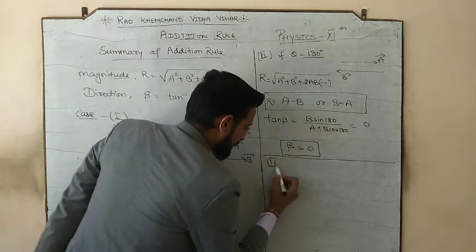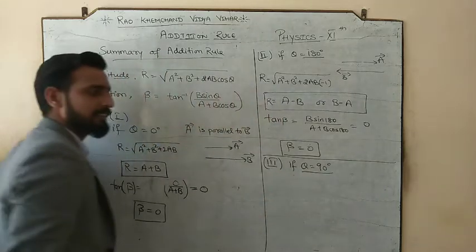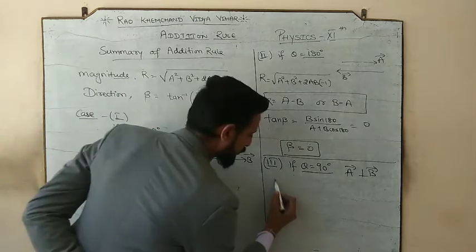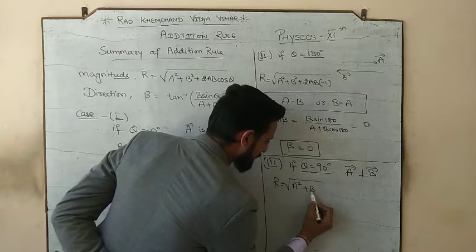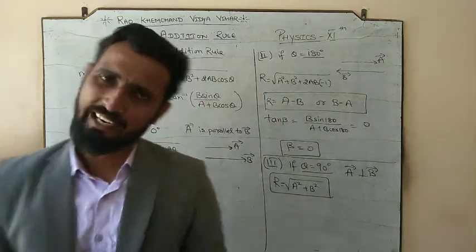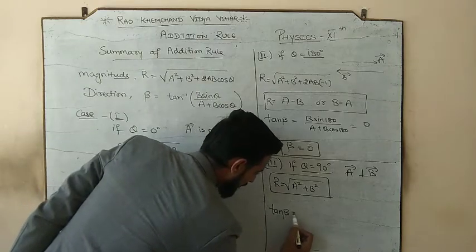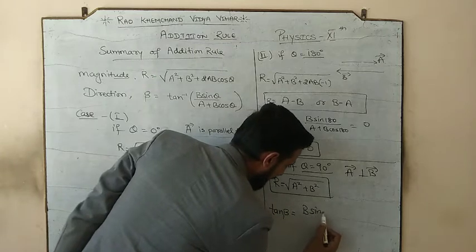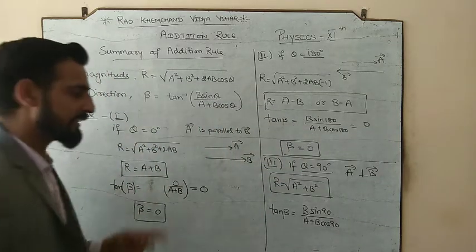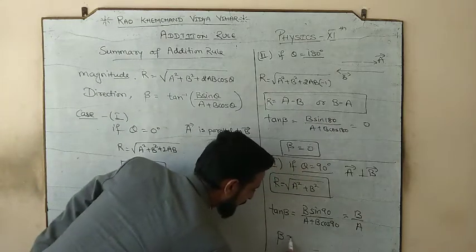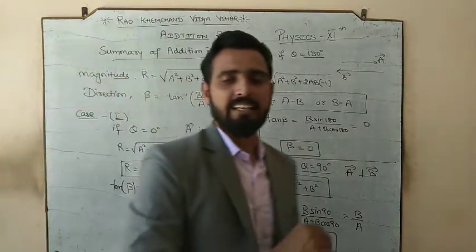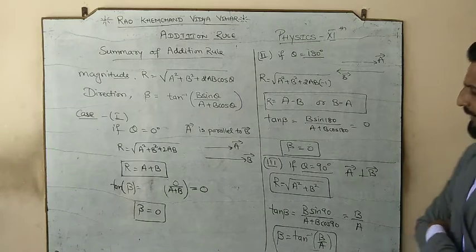Case 3: if θ = 90°, meaning the vectors are perpendicular to each other. The resultant = √(a² + b² + 2ab cos90°) = √(a² + b²), since cos90° = 0. For the direction: tanβ = b sin90° / (a + b cos90°) = b/a. So beta = tan⁻¹(b/a). These are the three special cases.